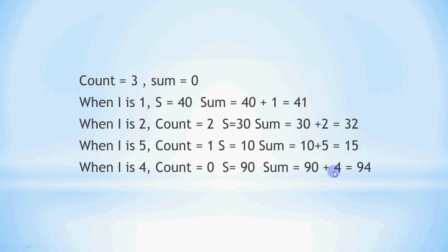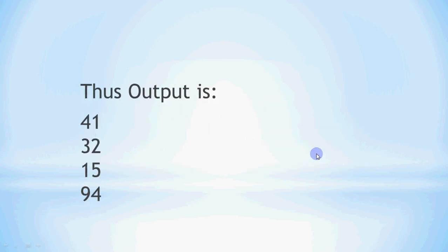That is how all the iterations work, and finally this will be your output. If you run this code in Python, you will see a dot because the data type is float — Python attaches a decimal point. The actual output is 41.0, 32.0, 15.0, and 94.0, each on a separate line, because print always prints on the next line. You have to take care of where to print and what is printed.